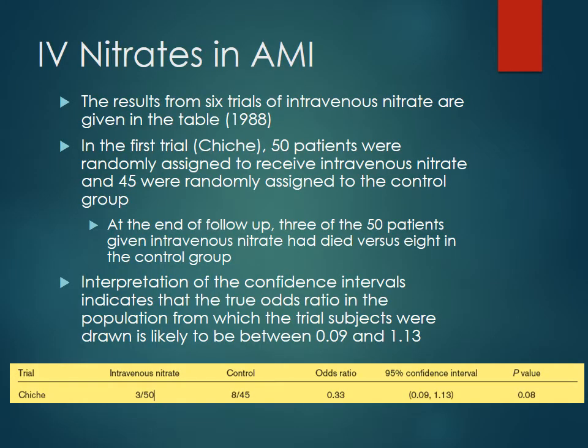The first study we're going to be looking at is the Cheech trial. Essentially, 50 patients were randomly assigned to either receive intravenous nitrates or were assigned to the control group. The groups are pretty evenly divided — 50 patients in one and 45 in the other. While it's ideal to have equal numbers in each group, you'll see very frequently in the literature that that's not always possible. It's not necessarily a problem; you just want the groups to at least be somewhat even.